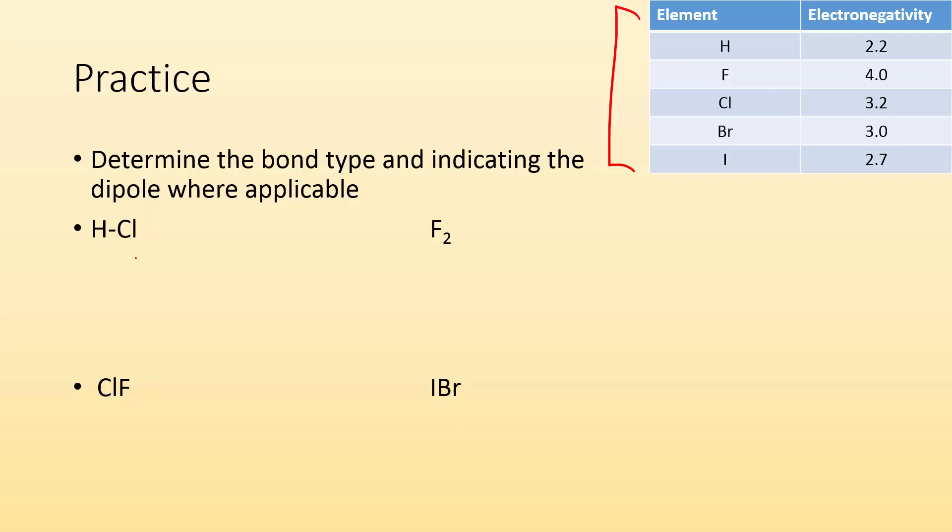So HCl - we got hydrogen 2.2 and Cl 3.2. They're uneven, so they're going to be polar. We have a polar bond. And now let me indicate the dipole. Chlorine is the more electronegative, so it's going to be the slightly negative, and hydrogen is going to be the slightly positive one.